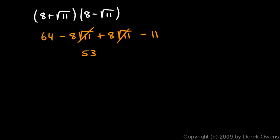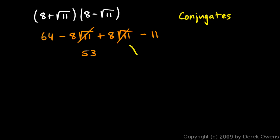Again, I get a rational number. Two binomials like this that are just alike except for the sign — one is positive and one is negative — those are called conjugates. And when we multiply conjugates in this form, the radicals always cancel out.